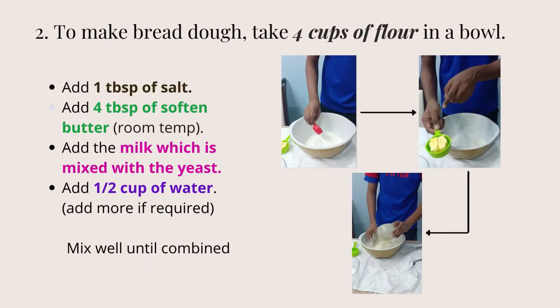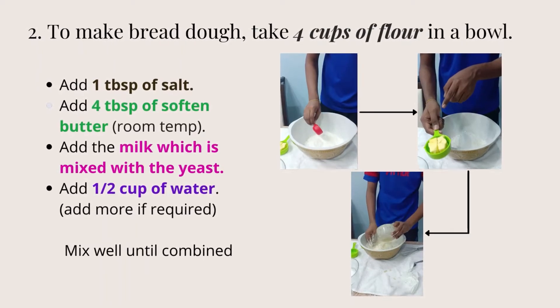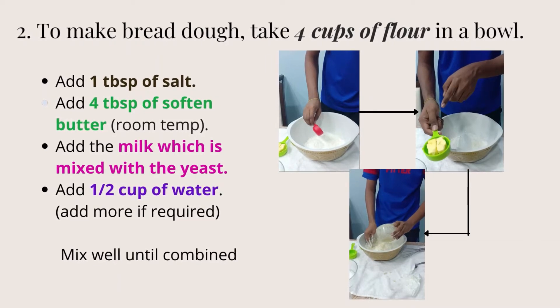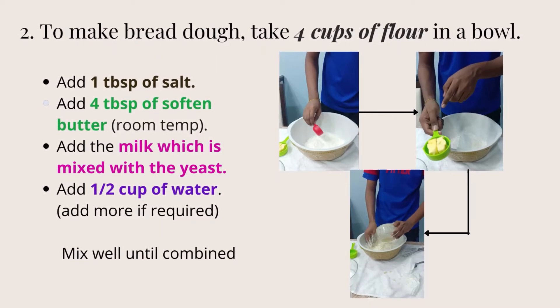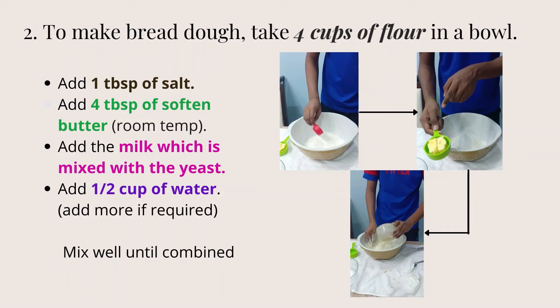The next step: we will take 4 cups of flour in a bowl to make the bread dough. Add 1 tablespoon of salt and 4 tablespoons of softened butter which is at room temperature with the dough. Then add the milk which is already mixed with the yeast, and half to 1 cup of water — more if required. Mix them well until they are combined.